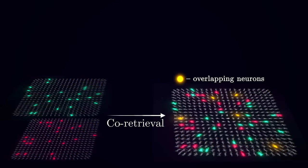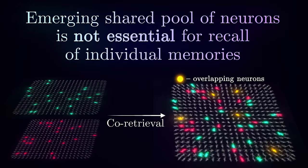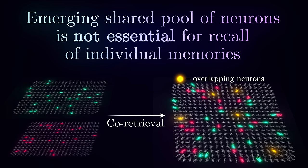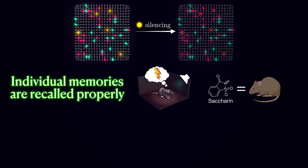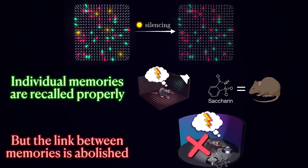Interestingly, this shared pool of neurons that emerges as a result of the co-retrieval is not essential for storing individual memories. If you selectively silence these neurons, fear conditioning and taste aversion memories in isolation are recalled properly. However, after silencing saccharine fails to induce freezing. This means that the emerging overlapping memory trace holds information about the link between the two memories rather than the content of them.